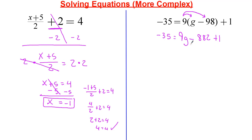So I'm going to combine this over here first. So negative 35 equals 9g, and that's going to be negative 881, because I have to add that 1. Now I'm going to add 881 on each side. Add 881.